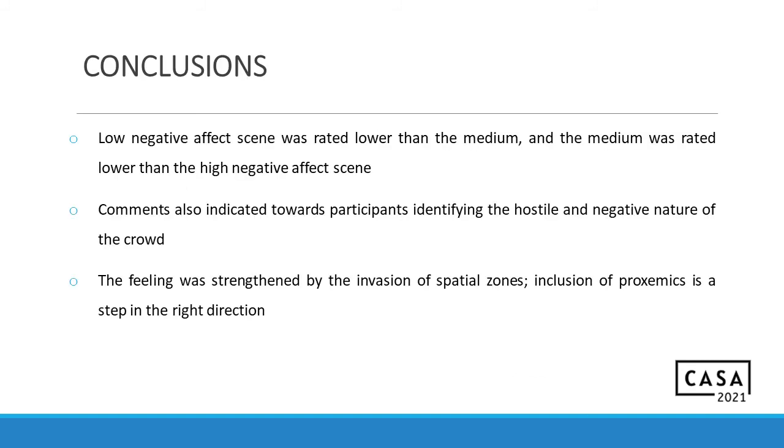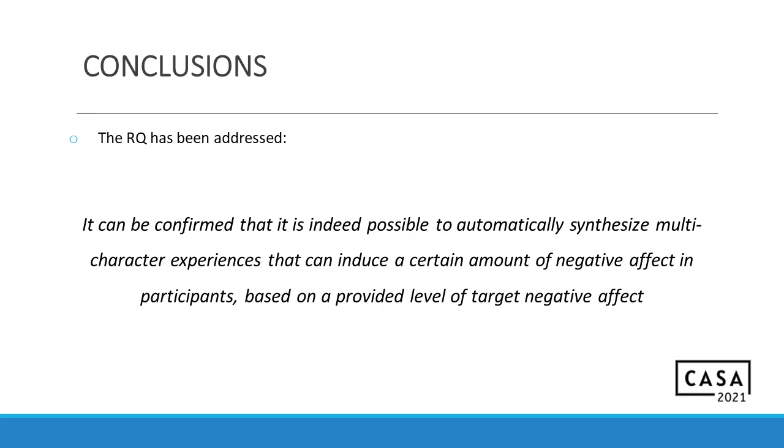Here is a box plot of the user study results. And finally, to conclude what all this means. Well, the low negative effect scene was rated lower than the medium, and the medium was rated lower than the high. Also, comments indicated towards participants identifying the hostile and negative nature of the crowd. They felt the hostility against them in the virtual scenarios. And the feeling was strengthened by the invasion of spatial zones. Basically, inclusion of proxemics was a step in the right direction. So, that is something that we found out through this project. To conclude it all, the research question has been addressed. It can be confirmed that it is indeed possible to automatically synthesize multi-character experiences that can induce a certain amount of negative effect in participants, provided a level of target has been given.